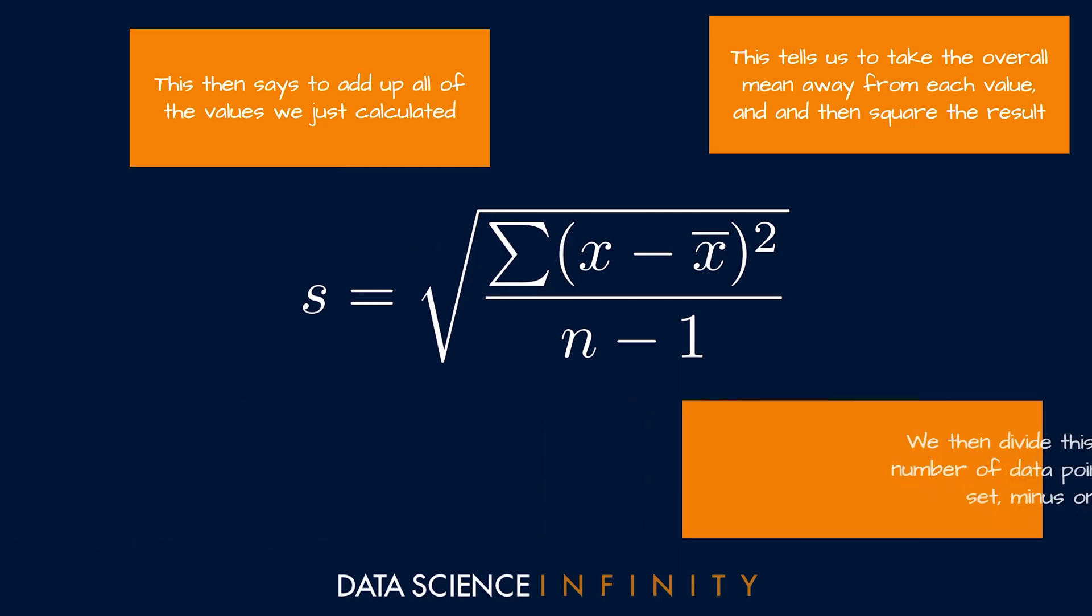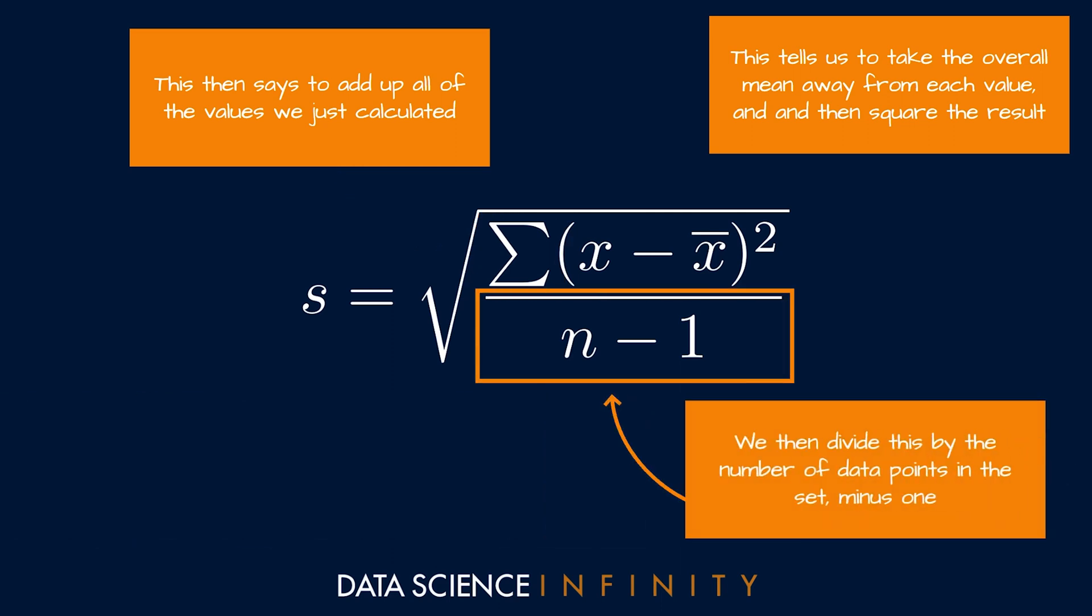Once we have this, the next step is to divide this by the number of data points in the set minus one, which will give us the average deviation per value rather than the total deviation.